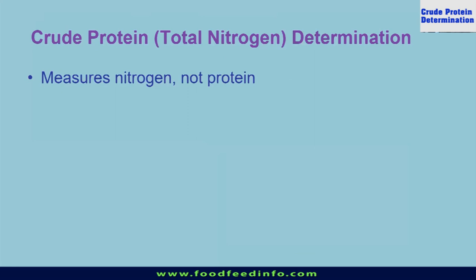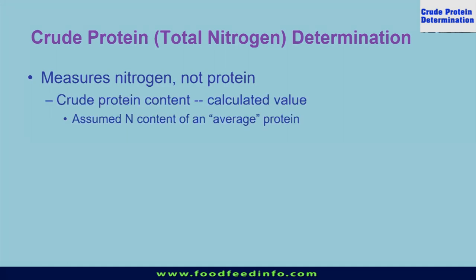Crude protein determination — the technique we use for this determination basically determines the nitrogen content of a feed sample. We are not going to determine the actual protein content of a sample. The reason being, the technique we use actually determines the nitrogen content of a feed sample, and on the basis of that nitrogen content, we calculate the crude protein content.